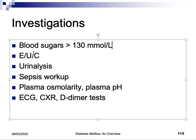In HHS, when you check for ketone bodies you will find nothing. Urine will show glucose. Check electrolytes, urea, creatinine, sepsis workup to find the precipitating cause, plasma osmolarity, plasma pH, ECG, and chest X-ray — all to check what started this condition.